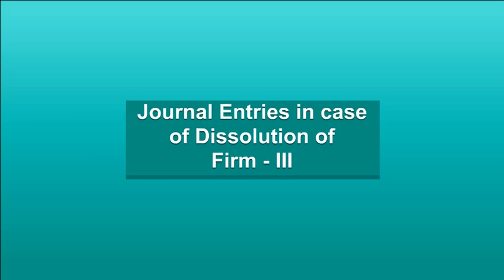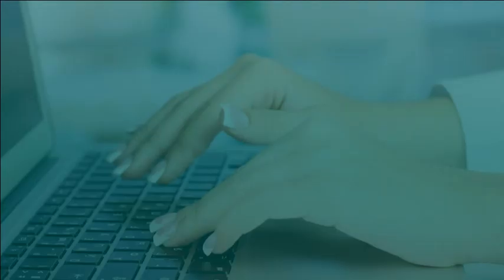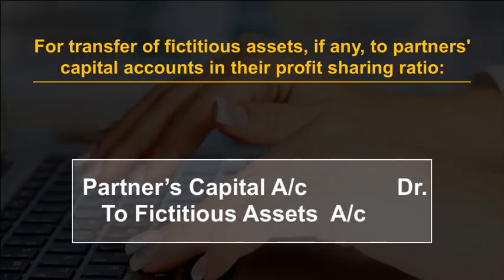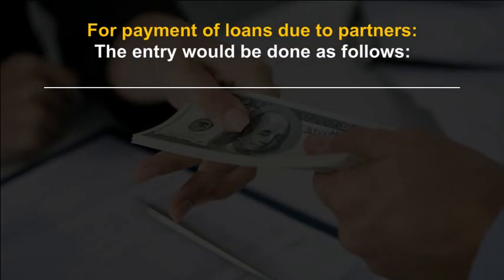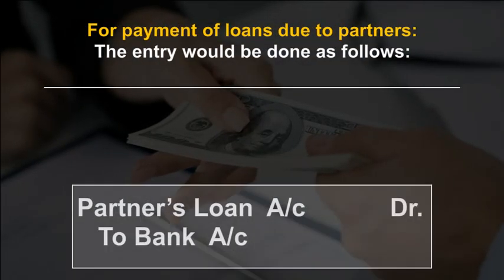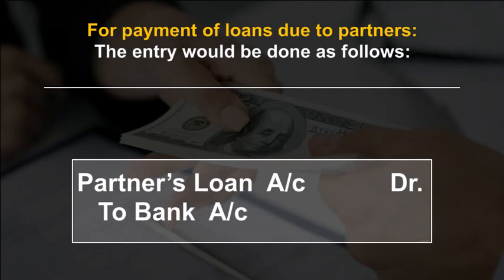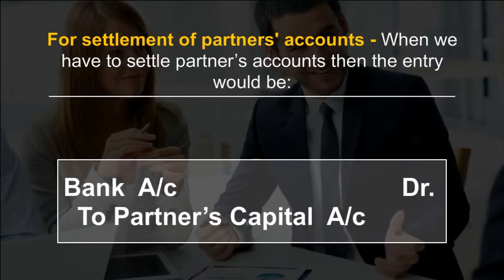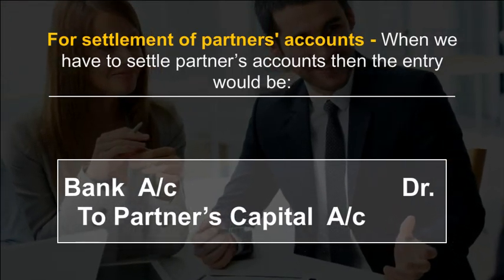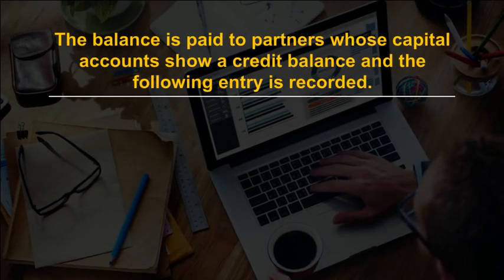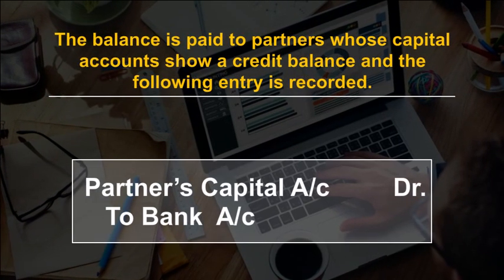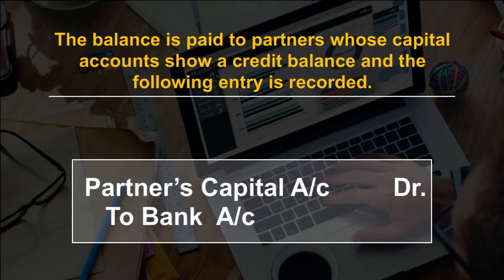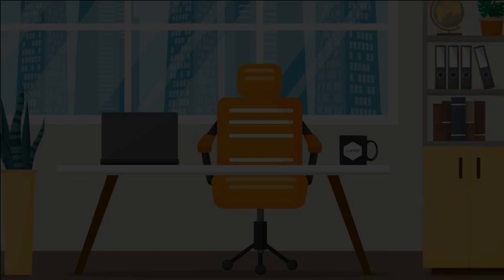For transfer of fictitious assets, if any, these are transferred to partners' capital accounts in their profit sharing ratio. For payment of loans due to partners, the entry is recorded accordingly. For settlement of partners' accounts, when we have to settle partners' accounts the entry is made, and the balance is paid to partners whose capital accounts show a credit balance with the corresponding entry recorded.